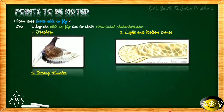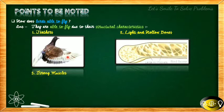The third structural characteristic is strong muscles. Birds flap their wings to fly, so they need a lot of energy. That's why they need very strong muscles — because they are always flapping their wings to fly in the air.